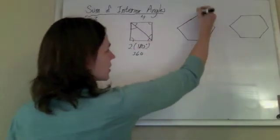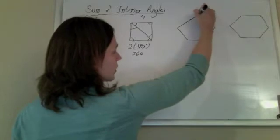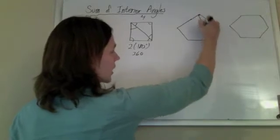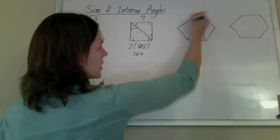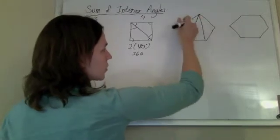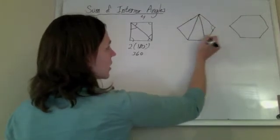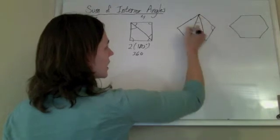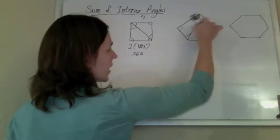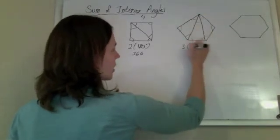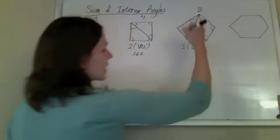If I look at this one here and do the same thing, if I start at a point and try to draw triangles, I have one, two, three triangles. Each triangle has 180 degrees in each one of the angles. So I have three times 180 degrees, and it's five sides.